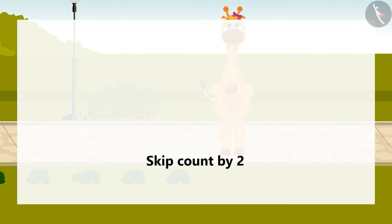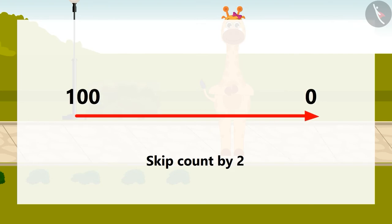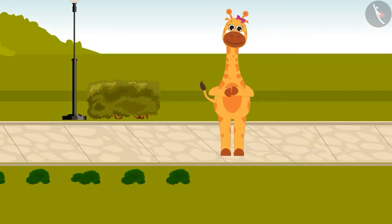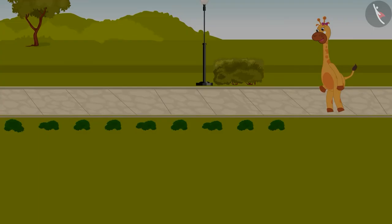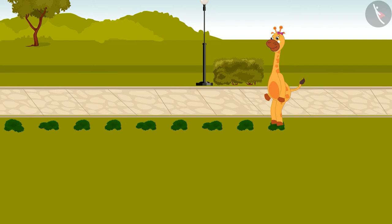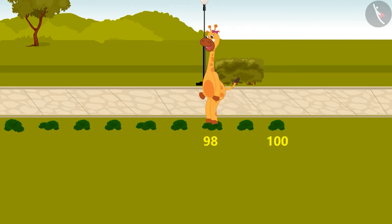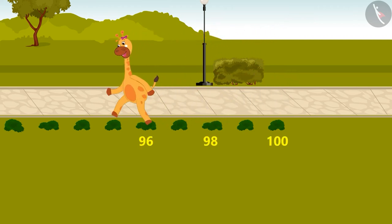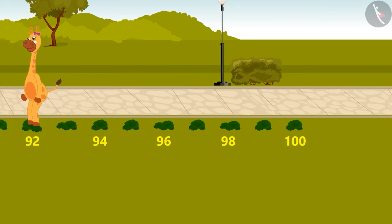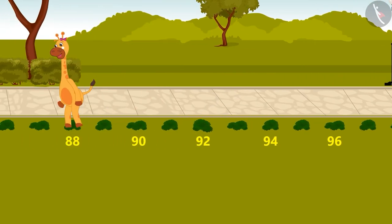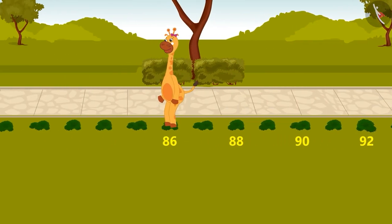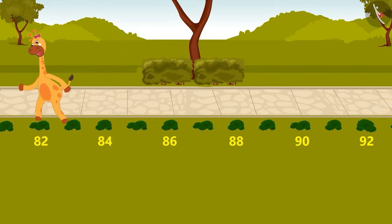Will you skip count by 2 from 100 to 0 with me? Awesome! Let's start from 100. The numbers that we land on, we will write them like this. 100, 98, 96, 94, 92, 90, 88, 86, 84, 82, 80.